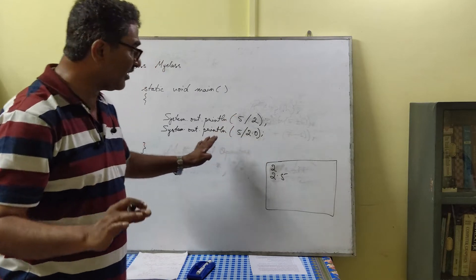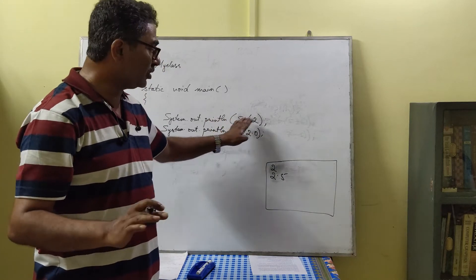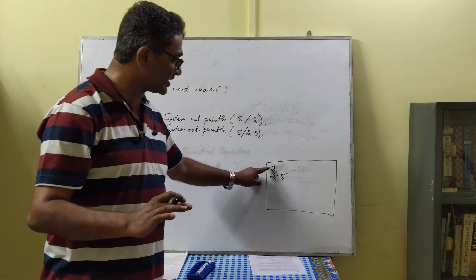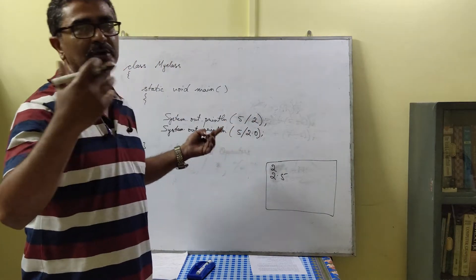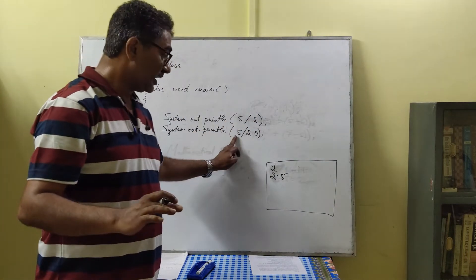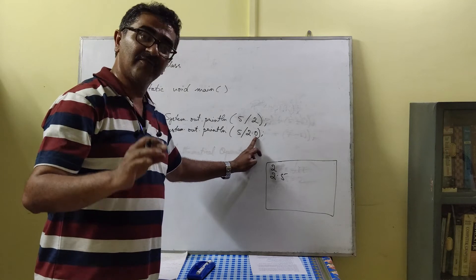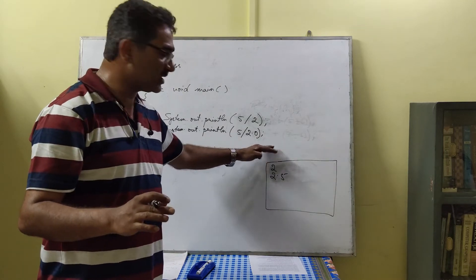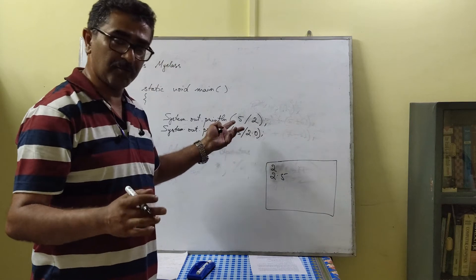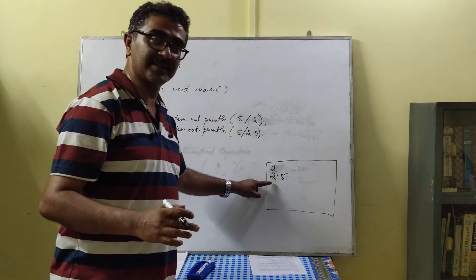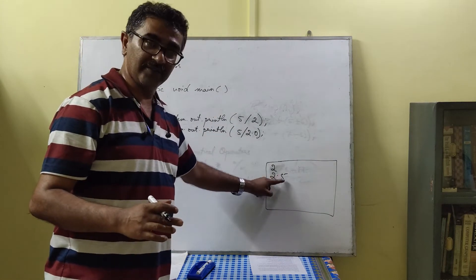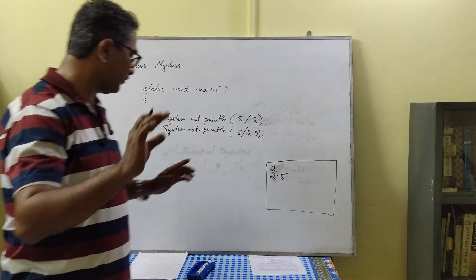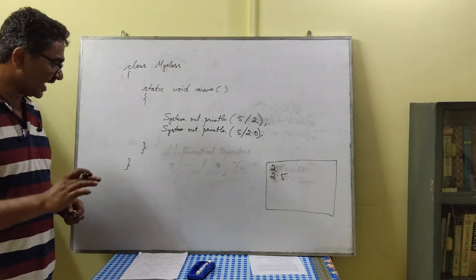If both the numerator and denominator are integers, the result will be an integer — you only get the quotient. If one of the numbers is a floating-point number, either 5.0 or 2.0, or both, you will get the result as 2.5 — the answer will also be of floating-point type.